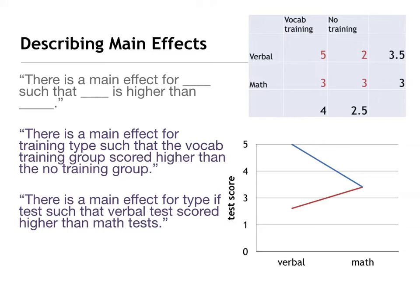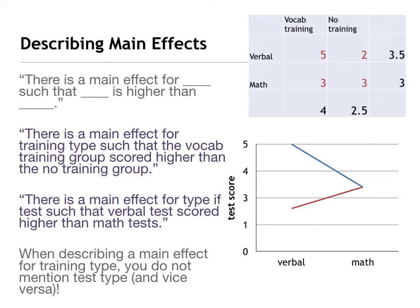We'll do the same thing for vocabulary training versus no training. There's a difference there — we have four versus two and a half. Vocabulary training people scored higher when they had the vocabulary training than when they didn't. So there's a main effect for the type of training, such that the vocabulary training group scored higher than the no training group. In both situations, we're only describing the main effect for one independent variable at a time — no mention of math versus verbal when we're describing the training effect.